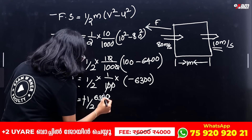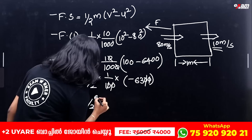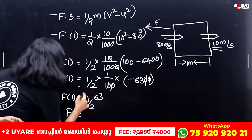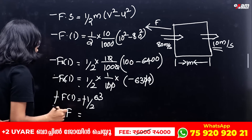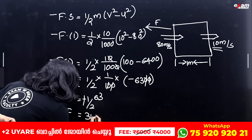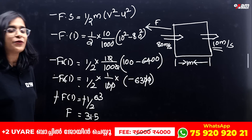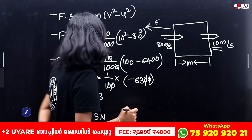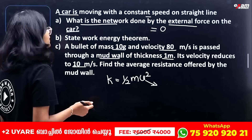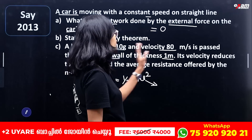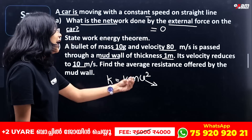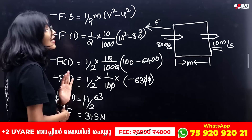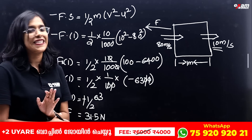The two negatives cancel, giving F = (1/2) × (1/100) × 6300 = 6300/200 = 31.5 Newton. So the resistive force offered by the mud wall is 31.5 N. The key point is that the resistive force is in the opposite direction to displacement, which is why we use the negative sign.